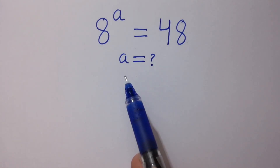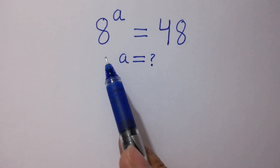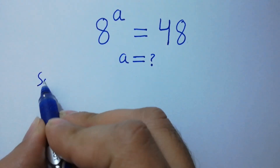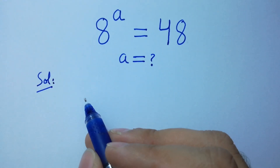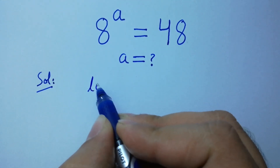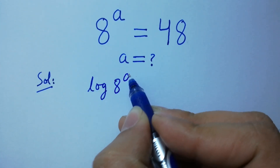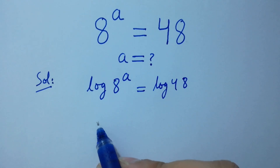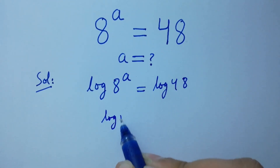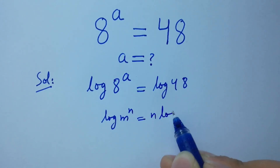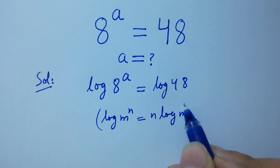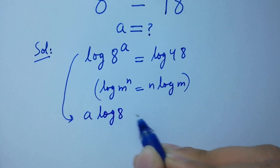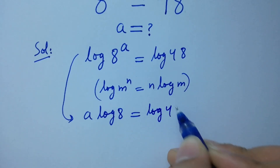Find the value of a if 8 to the power a equals 48. Taking log on both sides: log 8 to the power a equals log 48. As we know log m to the power n equals n log m, it will be a log 8 equals log 48.